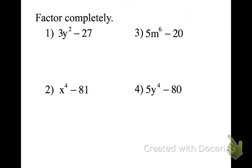Let's check it out. We're doing 3 is the GCF, and I'm left with a difference of squares, y squared minus 9. So then I'm left with, I can break down that difference of squares to 3 times y plus 3 times y minus 3. Number 2, go.